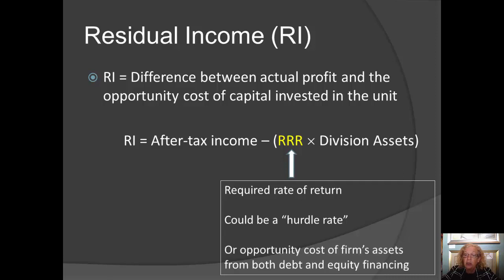Alternatively, a firm could use its opportunity cost. These resources came from somewhere — either from debt financing, equity financing, or a combination of the two. Therefore, the firm could use the cost of having these assets as the measure of the minimum return it would expect the division to generate.